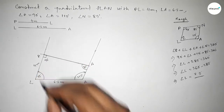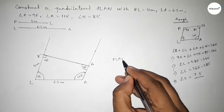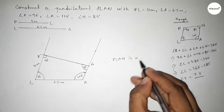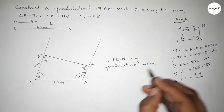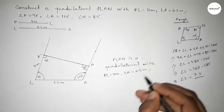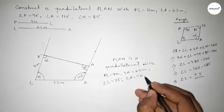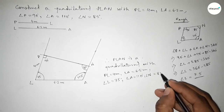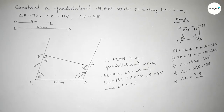This is perfectly an 85 degree angle. So this side is 6.5 centimeters and this side is 4 centimeters. Therefore, PLAN is a quadrilateral with given measurements: PL equal to 4 centimeters, LA equal to 6.5 centimeters, angle P equal to 90 degrees, angle A equal to 110 degrees, angle N equal to 85 degrees, and angle L equal to 75 degrees. That's all — thanks for watching. If this video is helpful to you, please share it with your friends.